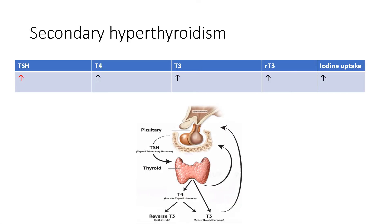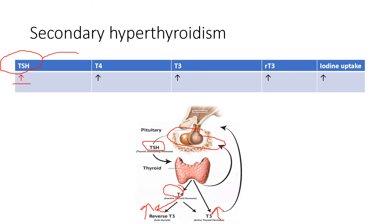The first cause is secondary hyperthyroidism, meaning the problem lies in the pituitary — it's producing a lot of TSH. The primary disturbance is excess TSH, which stimulates the thyroid to produce a lot of T4. Subsequently, T4 is converted to reverse T3 (also high) and T3. Everything is high in secondary hyperthyroidism because TSH is driving it. Because TSH is high, it stimulates the thyroid to take up a lot of iodine, so iodine uptake is also high.